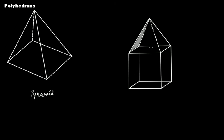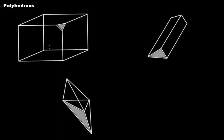Now imagine you have a cube, and on the top of this cube you place a pyramid. The base of the pyramid sits on top of the cube. This entire composite shape is still made up of polygons — the cube is a polyhedron and the pyramid is also made of polygons — so this combined diagram is also a polyhedron.